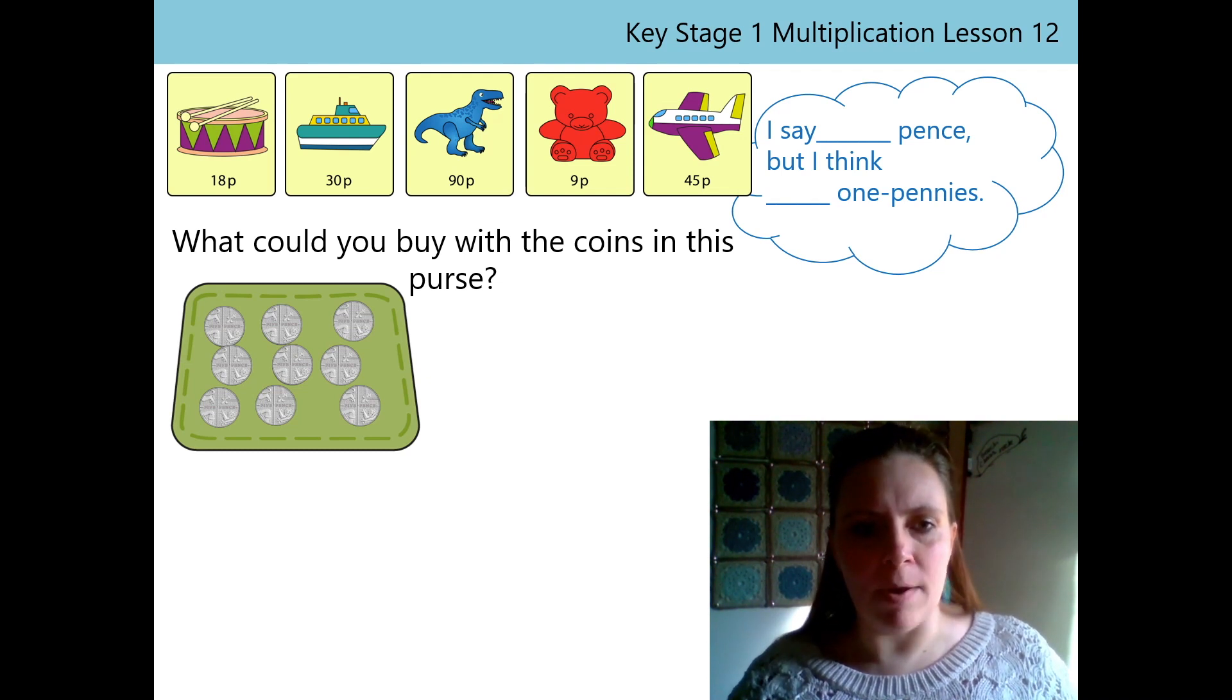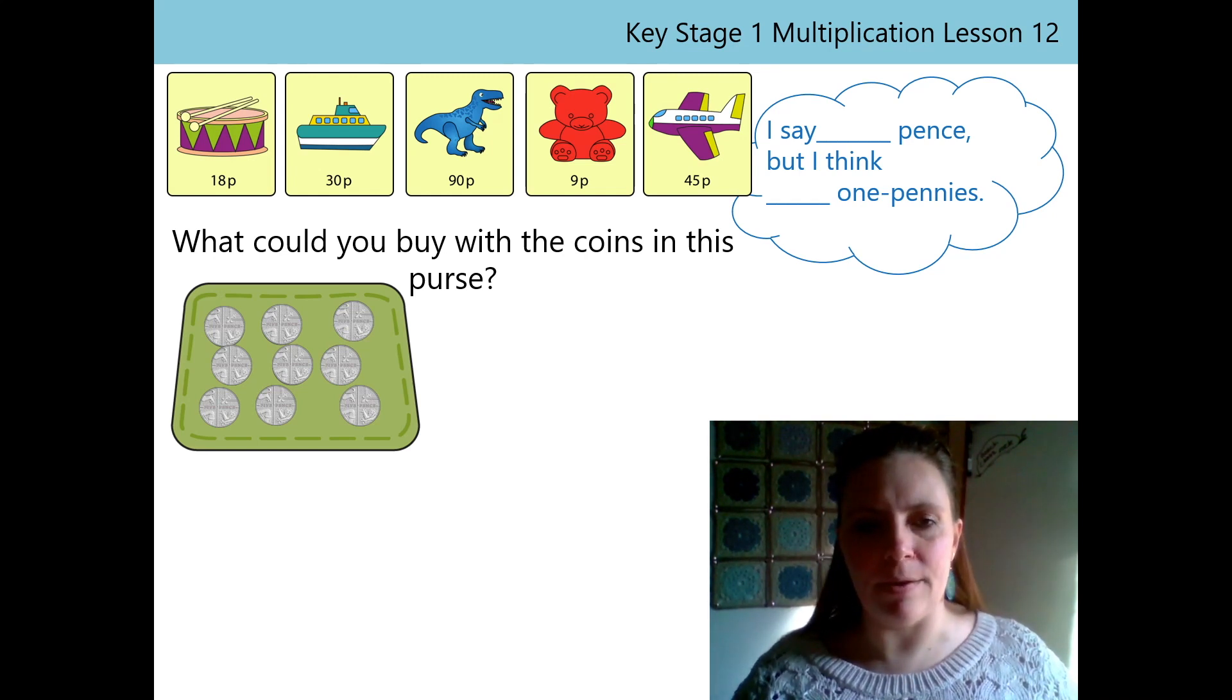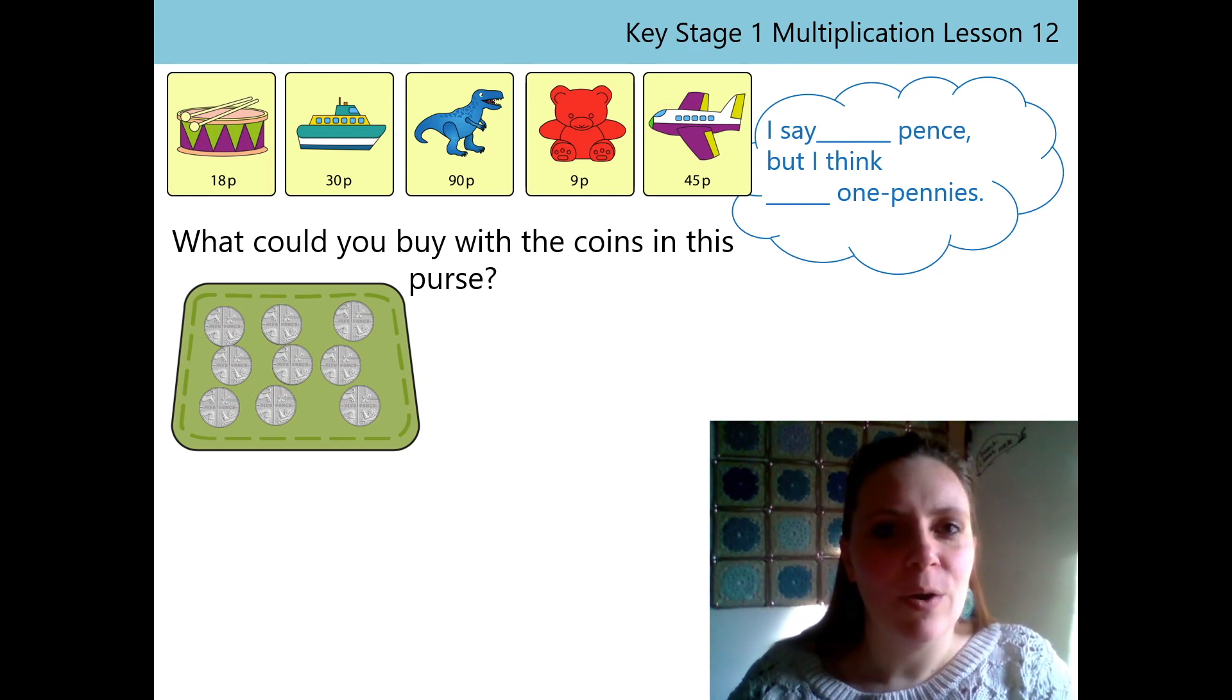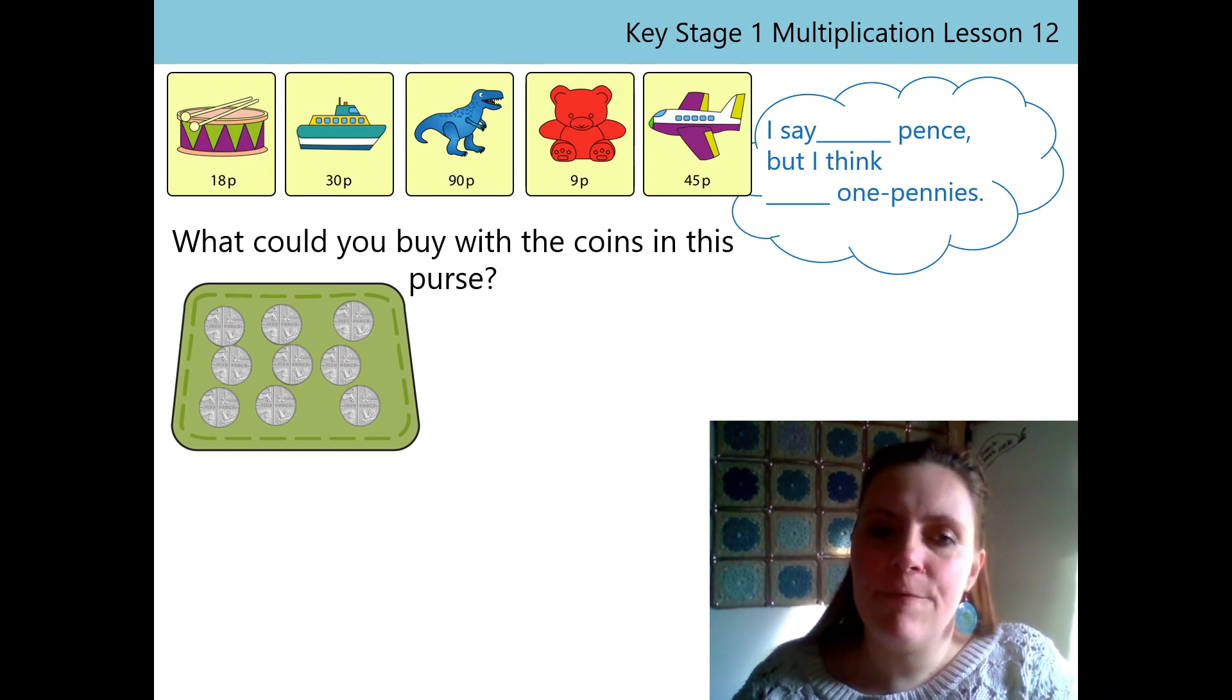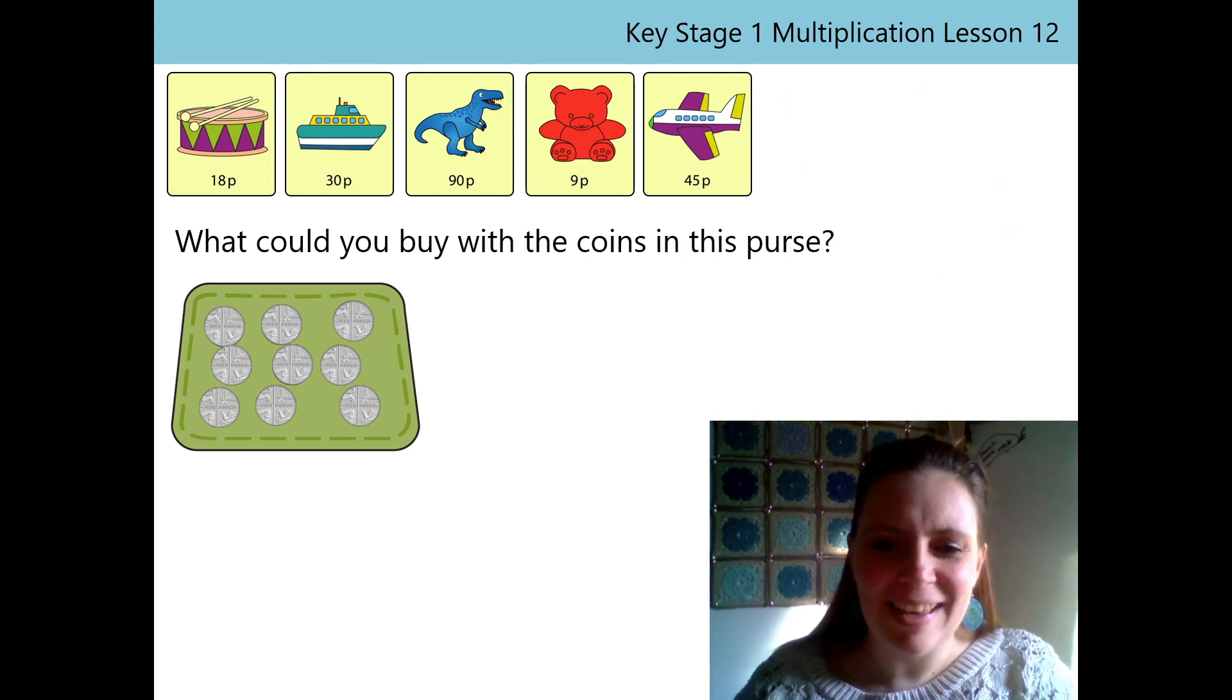Now this time, when I count my 5p coins, I'm not going to move them. I'm just going to touch them this time. So are you ready to count with me? Lovely. Thank you. 1, 5 penny. 2, 5 pennies. 3, 5 pennies. 4, 5 pennies. 5, 5 pennies. 6, 5 pennies. 7, 5 pennies. 8, 5 pennies. 9, 5 pennies. Of course, that one was tricky to say. So I've got 9, 5 pennies coins. Thanks.